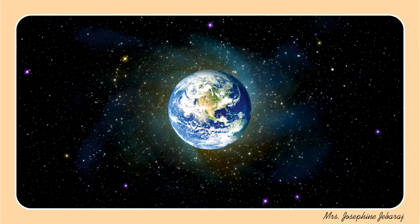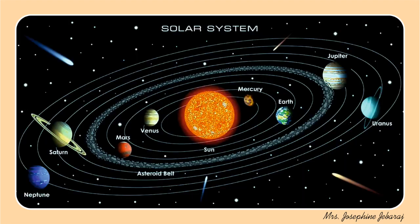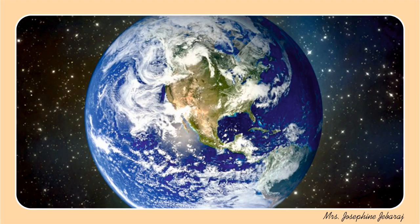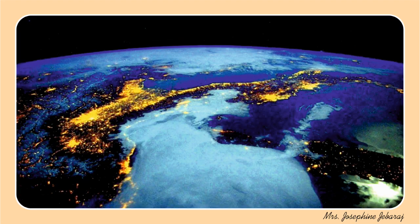Among all these planets, Earth is the only planet that supports life. Earth is the 3rd planet from the sun and is the 5th largest in the solar system. It has only 1 moon. It is the only planet loaded with free oxygen, oceans of water — that is 71% of water on its surface — and several million species of life.